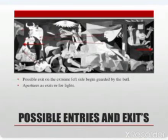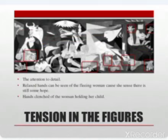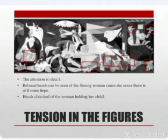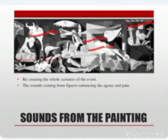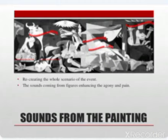The tension in the figures — notice how they clutch and hold their hands, and the depiction of hands deserves close attention. Relaxed hands can be seen on the fleeing woman, suggesting there is still some hope. Hands clenched on the woman holding her child convey tension, trauma, pain, and anguish. These are the sounds from the painting, though not heard — you feel that the painting is screaming aloud. A lot of sound and noise come out of it, recreating the whole scenario of the Spanish Civil War. The sounds coming from the figures enhance the agony and pain.